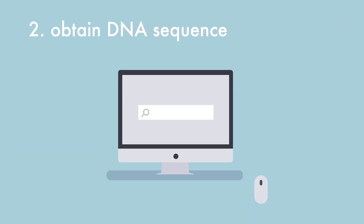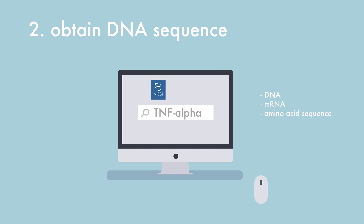The DNA sequence should be obtained of the selected target protein. The DNA, mRNA and amino acid sequence of every protein in the human genome can be obtained from publicly available gene and protein databases, like those present at the National Center for Biotechnology Information in the USA and the European Molecular Biology Laboratory in Europe.